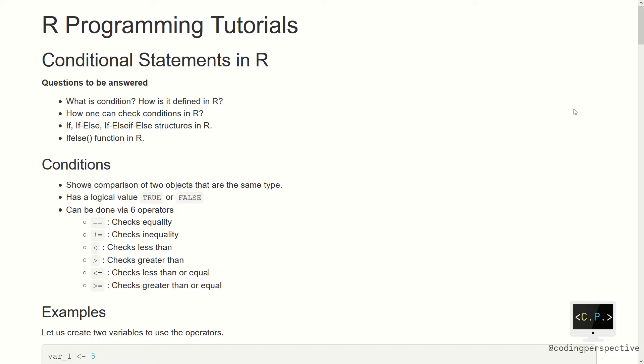Let's start with defining a condition. A condition shows a comparison of two objects that are the same type. They have a logical value which is either true or false. They can be done via six operators. You can check equality or inequality, and you can also check if they are numeric: less than, greater than, less than or equal, or greater than or equal.